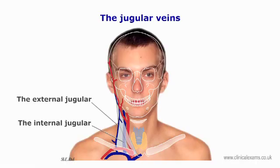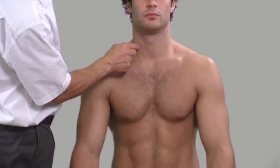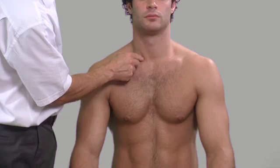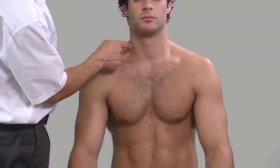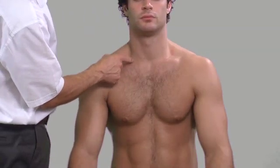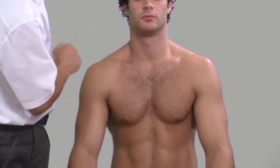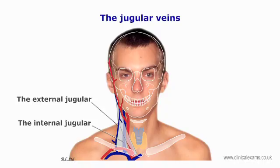The jugular veins: the internal jugular vein travels with the common carotid and vagus nerve inside the carotid sheath. It provides venous drainage for the contents of the cranium. The external jugular runs superficial to the sternocleidomastoid. The left and right external jugular veins drain into the subclavian veins.